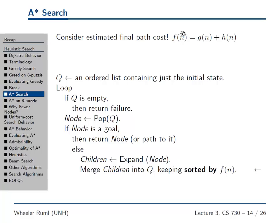A* search uses the same pseudocode as before, except we sort the open list by f. This is our standard best-first search. It keeps a queue — formally called the open list — representing the search frontier. You might want to implement it with a heap or something like that. We always pop off the node with the lowest f and look at it.